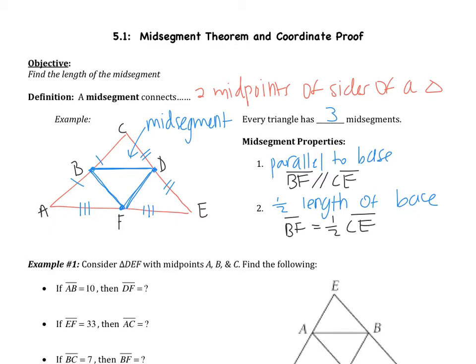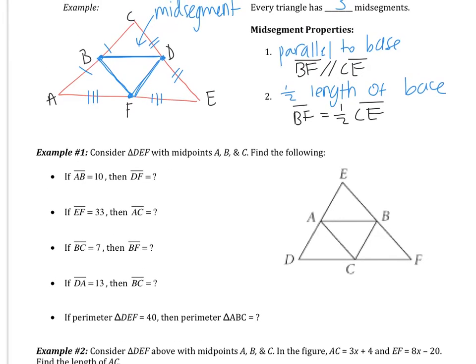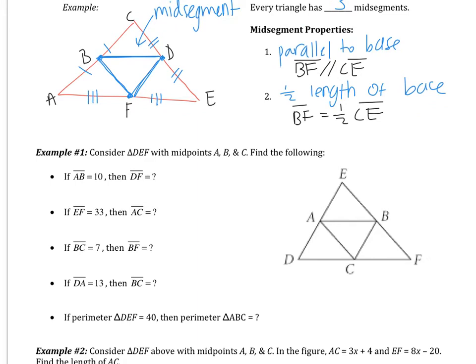So that's mainly what we're going to be doing in this video. So let's look at example one. It says, consider triangle DEF with midpoints A, B, and C. Find the following.